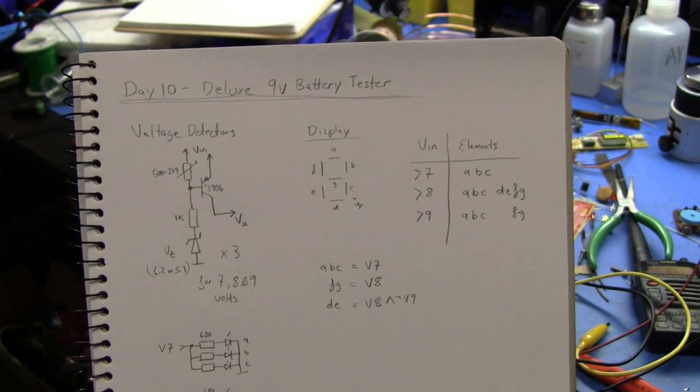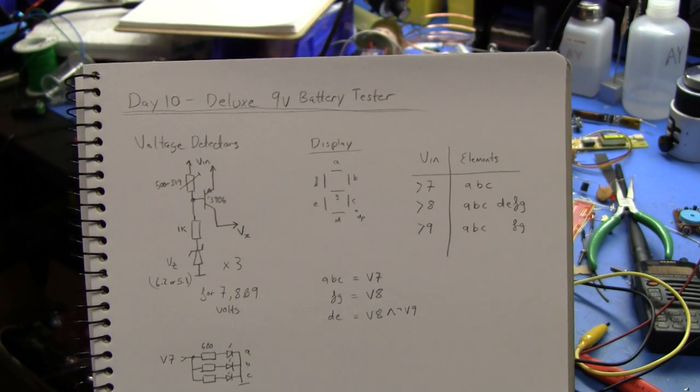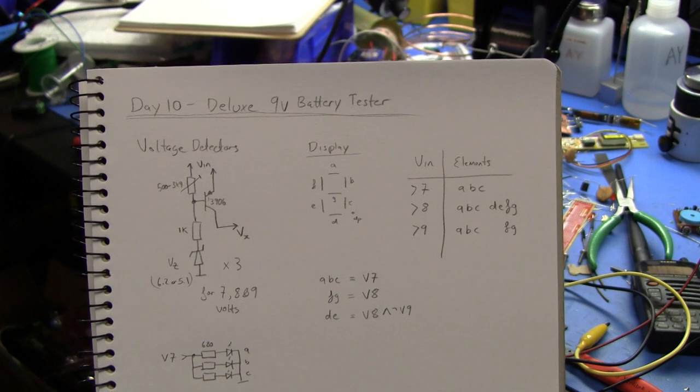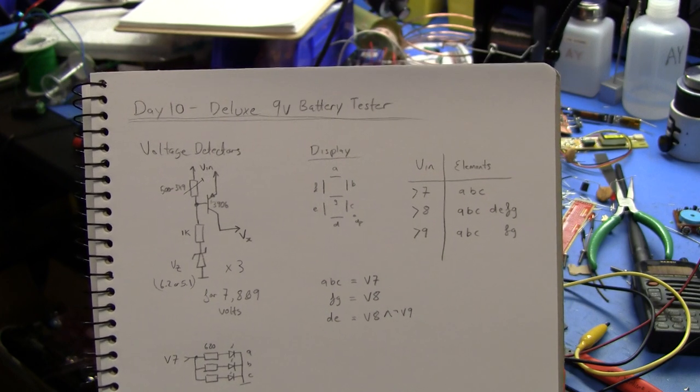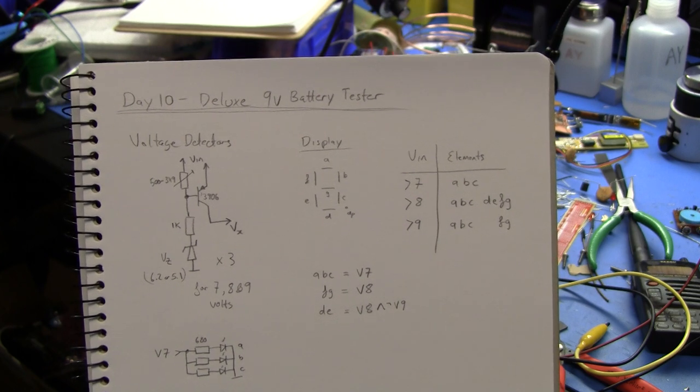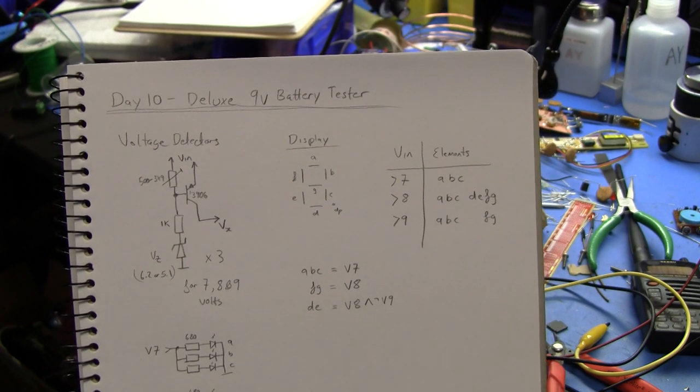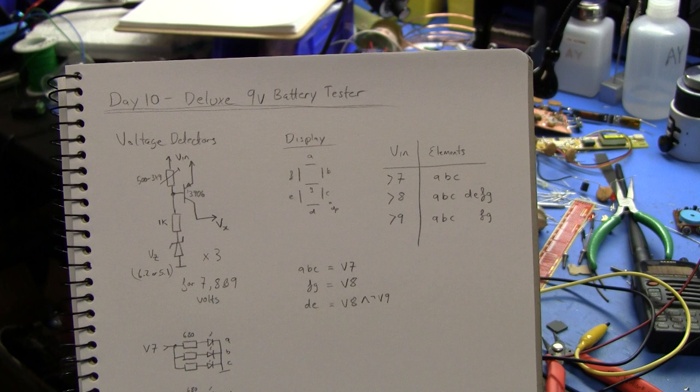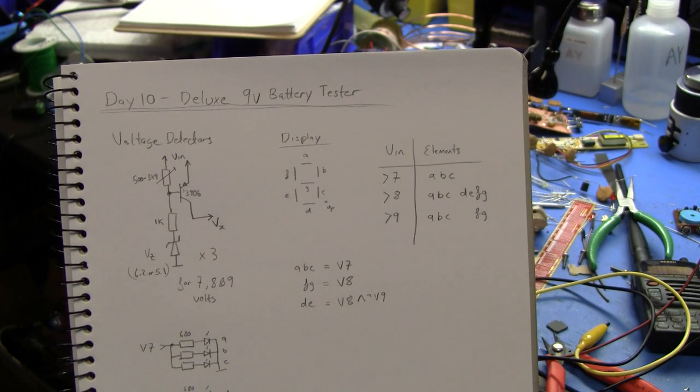So this project started off as a joke. Here at work someone was suggesting that I should make a 9-volt battery topper that was a tester for 9 volts and simply had a 7-segment display that would light up with a 9 based on the voltage drop of the appropriate number of LEDs in series.